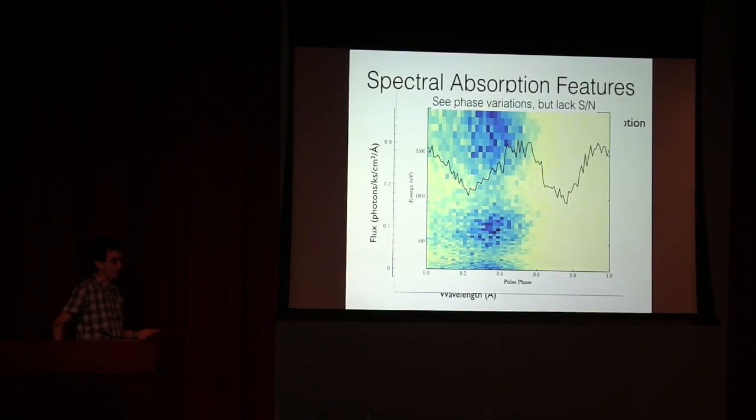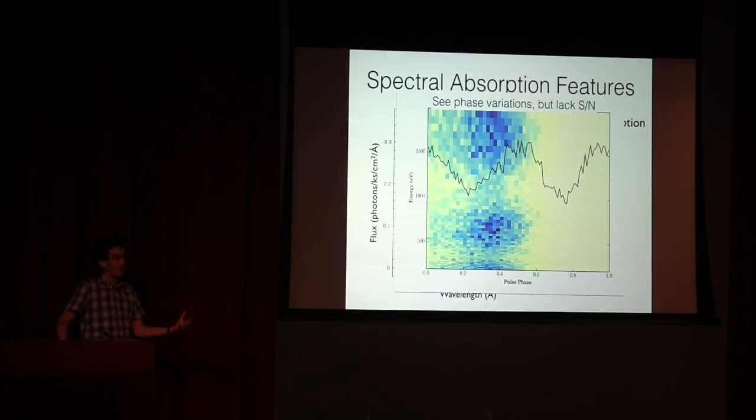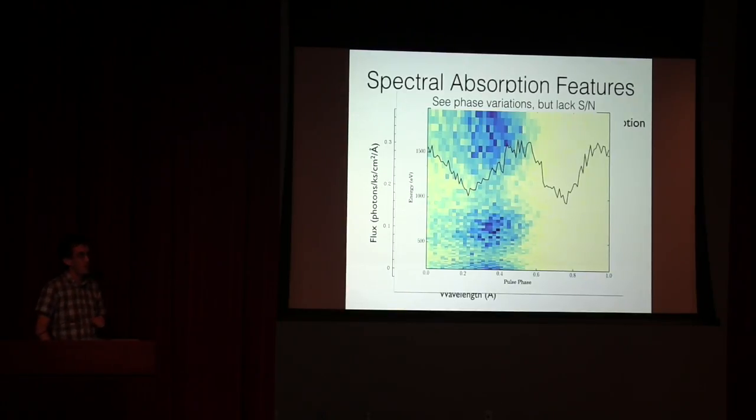But again, looking at a very small population of objects, just seven, with a wide variation in the observed properties, the temperature and magnetic fields. Looking at this over a larger population will really help us understand the physics of what's going on, the highly magnetized atomic physics, the magnetospheres of these objects, the cooling physics. How does the magnetic field evolve over the lifetimes of these neutron stars? How will that affect our implications for the pulsar population?